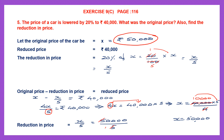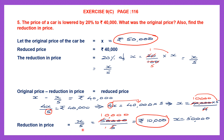50,000 divided by 5 equals 10,000 rupees. So the reduction in price is 10,000 rupees. The original price was 50,000 rupees, it has been reduced to 40,000 rupees, so 10,000 rupees was reduced. Another way is to subtract the reduced price from the original price: 50,000 minus 40,000 also gives the reduction in price of 10,000 rupees.